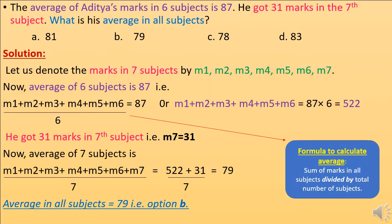The average of Aditya's marks in six subjects is 87. He got 31 marks in the seventh subject. What is his average in all seven subjects? Let us denote the marks in seven subjects by M1, M2, M3, M4, M5, M6, M7. The average of six subjects is 87.